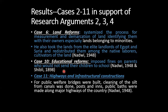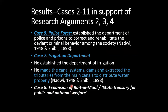Regarding educational reforms, one notable measure was that he imposed fines on parents who would not send their children to school. He also built many highways, bridges, canals, posts, inns, and public baths along major highways of the country. He established the department of police and prisons to correct deviant behavior in society, and established the department of irrigation, building canals, dams, and extracting tributaries from main canals to distribute water properly. He also expanded the state treasury for public and national welfare.